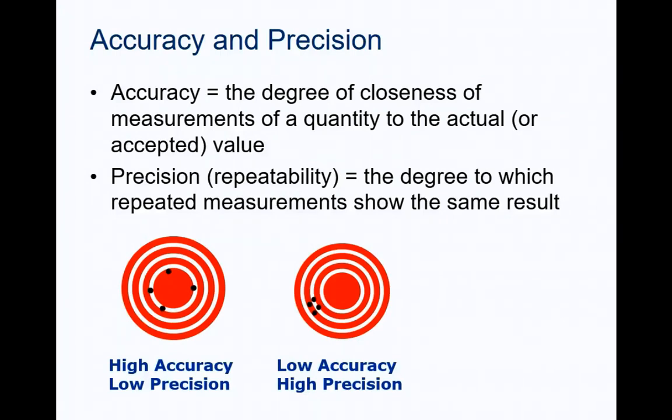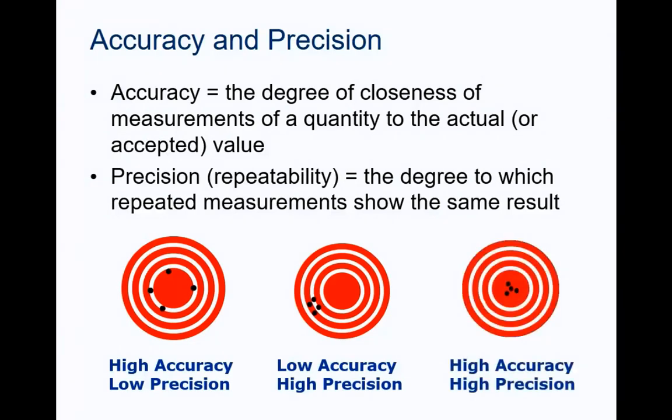The second target shows that the arrows, or repeated measurements, are close together, so the precision is high. But, the center of the measurements is not close to the target, or the actual value, of the quantity. What should a target look like if the measurement is both highly accurate and highly precise?